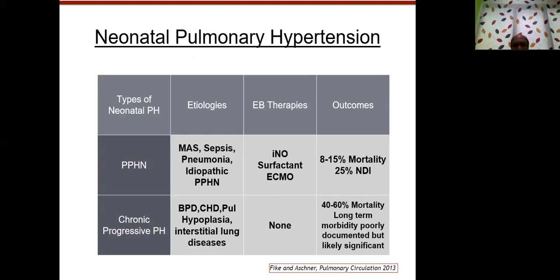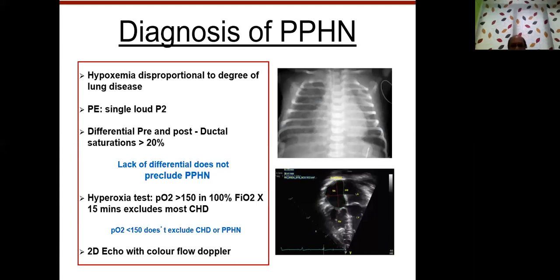When looking at outcomes, around 25% of babies with PPHN can have long-term neurodevelopmental impairment. In comparison, babies diagnosed with chronic pulmonary hypertension have mortality as high as 40 to 60%. There is significant long-term neurodevelopmental impairment in babies who survive PPHN — this is an important area requiring more research.